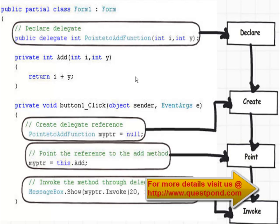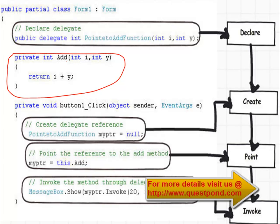First, let's try to understand how to create a delegate. Once we understand how to create a delegate, we will go back to the problem and see how a delegate will help us solve it. Here I have a simple add function and we are going to create a simple delegate which points towards this add function. Creation of a delegate is a four-step process: declare, create, point, and then invoke the function.